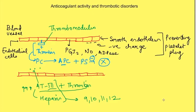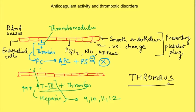If there is a problem with these anticoagulant mechanisms, it leads to formation of a thrombus. A thrombus is nothing but an inappropriate or excessive clot formation. These are dangerous since they can block blood vessels and thus decrease blood supply to the tissues.